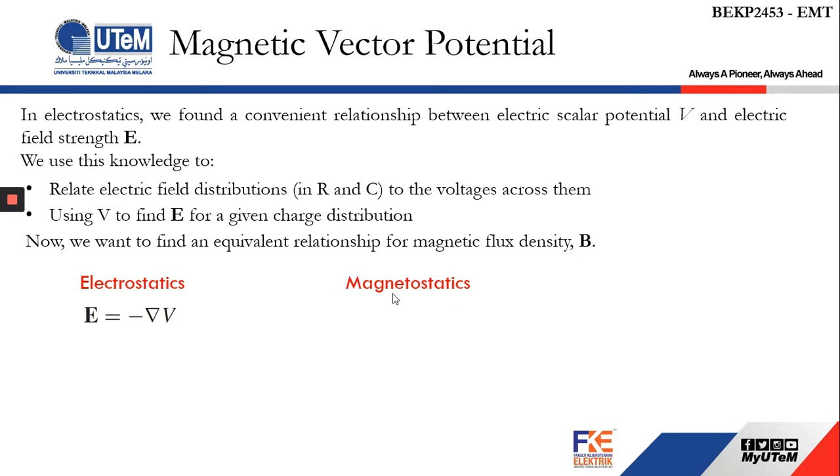E equals to negative del V. There are some mathematical derivations involved for us to get what is known as Poisson's equation that finds the relationship between the electric scalar potential V and the volume charge density in electric field.